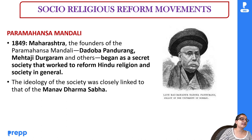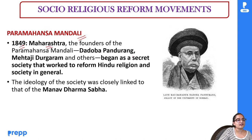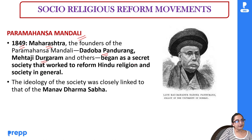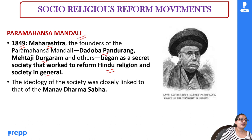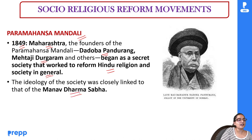The next organization is Paramhans Mandali, started in 1849 in Maharashtra by Dadoba Pandurang and Mehtaji Durgaram. It began as a secret society seeking to bring reform to Hinduism and work for the upliftment of society. Its ideology closely matched that of Manav Dharma Sabha.